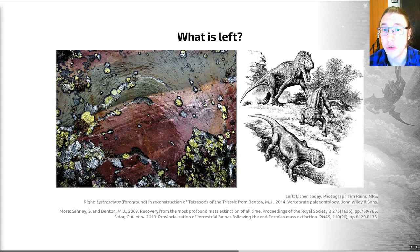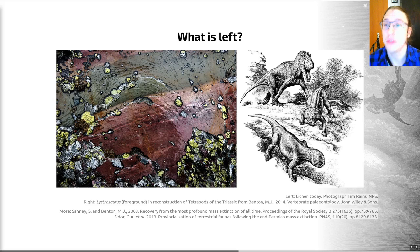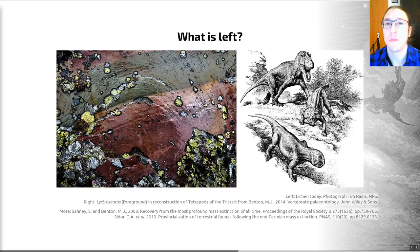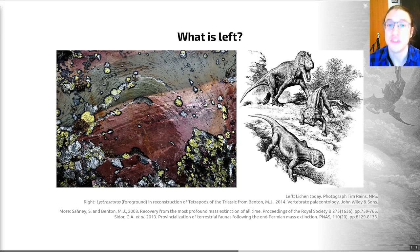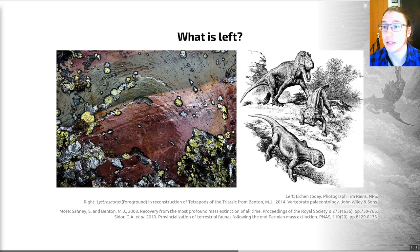Those taxa that do survive a mass extinction are sometimes called disaster taxa — essentially the leftovers. The first organisms back on the scene after many extinctions include lichens and species like ferns, which were common just after the biggest of all mass extinctions, the Permo-Triassic. Shown here is Lystrosaurus, a tusked reptile that was a disaster taxon after the Permo-Triassic extinction. Shortly after that event, this creature was found in almost every corner of the sparsely populated landscape of the earliest Triassic — it survived and spread across the continents.